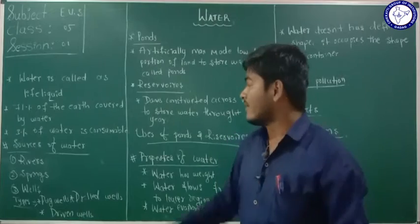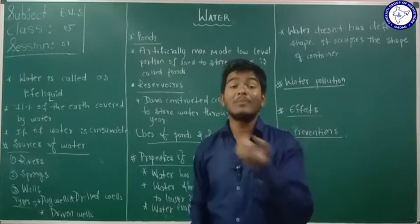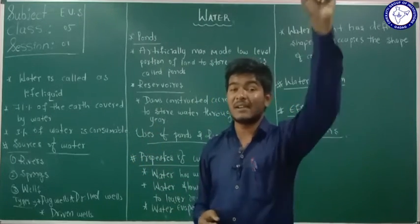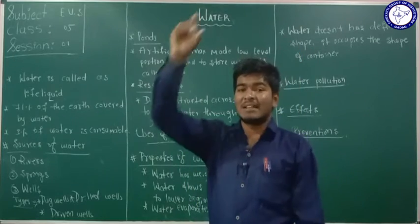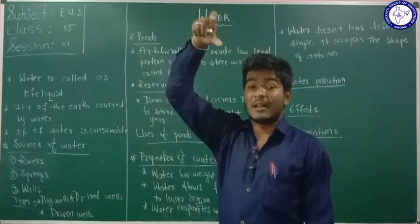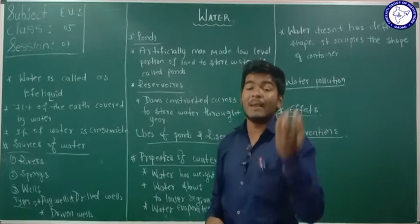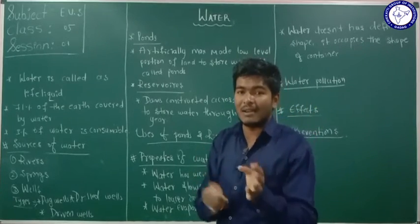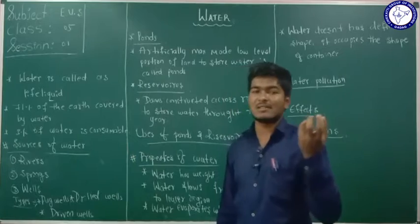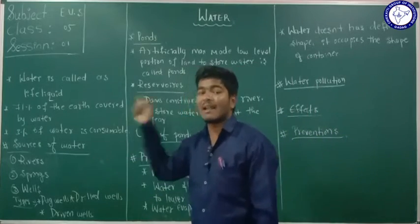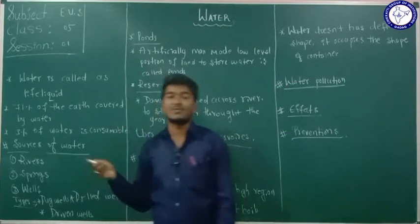How do rivers get their water? Rivers get water from rainfall, and also some rivers get water from ice caps present in the mountains. In India, the Jammu Kashmir region has the Himalaya mountains, whose ice caps melt due to sunlight and flow through the rivers. So rivers get water from rain and from ice caps.